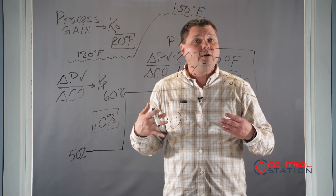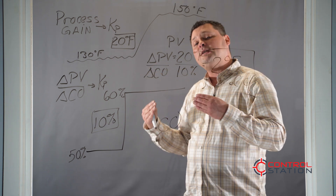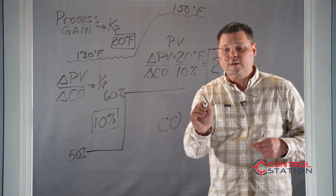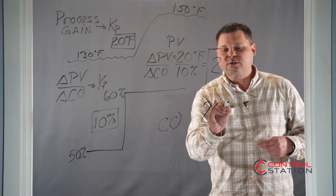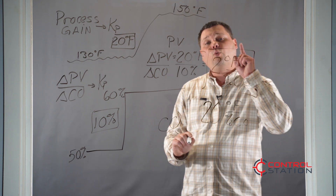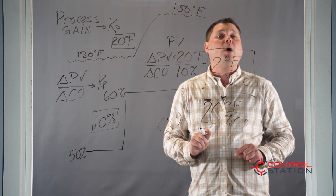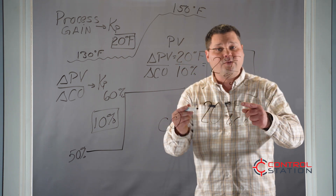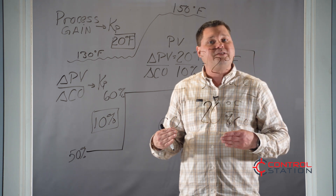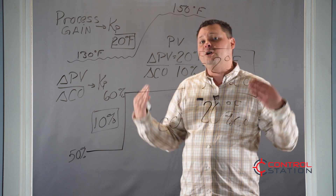The larger the number, the more sensitive the process variable is to changes in the output. If my process gain was not 2 degrees Fahrenheit but instead 20 degrees Fahrenheit per percent CO, that would mean for every 1 percent I move the control valve the temperature increases by 20 degrees Fahrenheit — obviously 10 times further. It defines the sensitivity of the process and gives us a lot of information about how well we can control it.